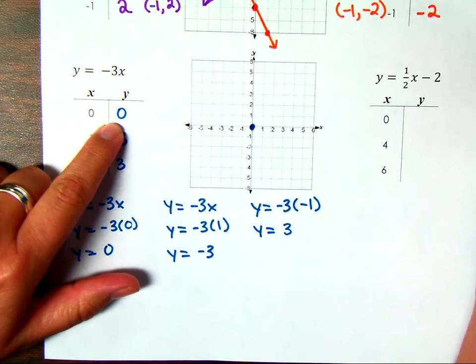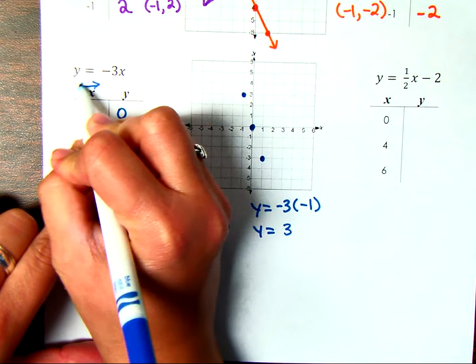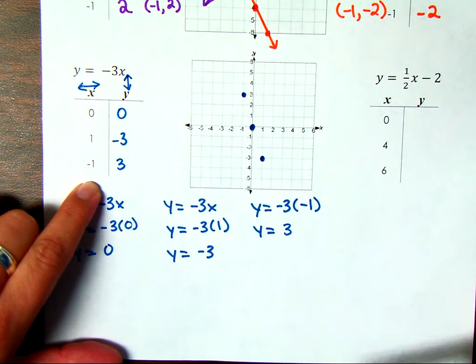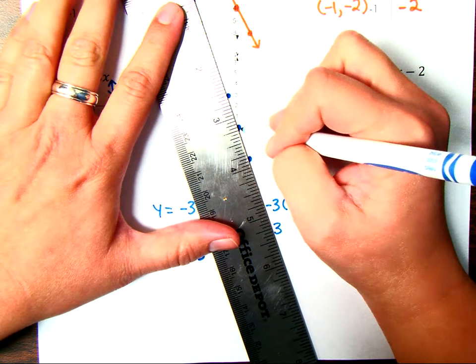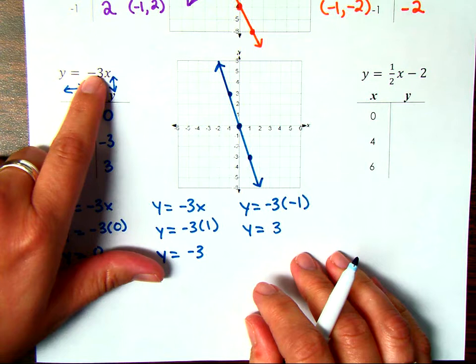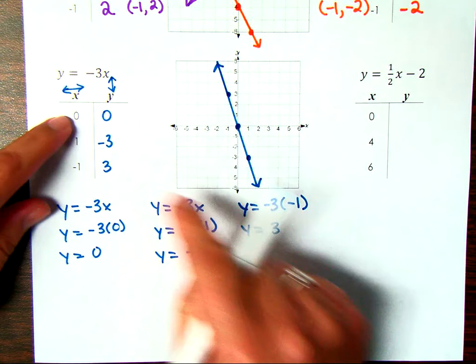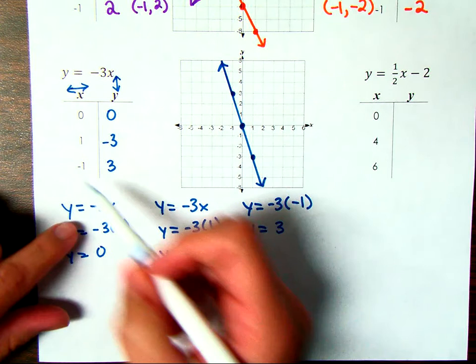We're going to graph now. When x is 0, y is 0 — that means we're staying at the origin. When x is 1, y is negative 3. When x is negative 1, y is positive 3. Remember: x is left to right (horizontal), y is up and down (vertical). Connect the dots and draw arrows at the end of the line to signify it continues on forever. This was a negative coefficient, so the graph goes down — as values of x increase, y decreases.